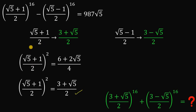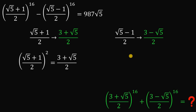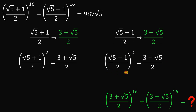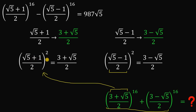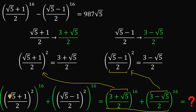So squaring (√5 + 1)/2 gives (3 + √5)/2. The same holds for the other pair: squaring (√5 − 1)/2 gives (3 − √5)/2. This means we can rewrite (3 + √5)/2 as [(√5 + 1)/2]², and (3 − √5)/2 as [(√5 − 1)/2]². Applying the law of exponents, 2 times 16 gives 32.